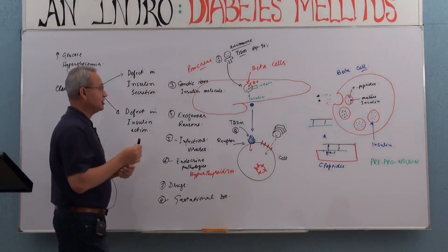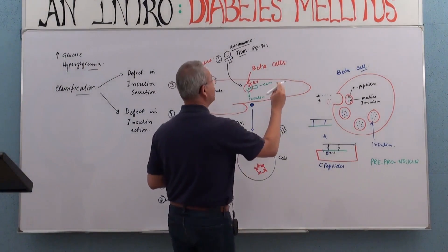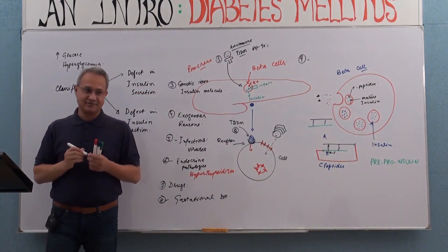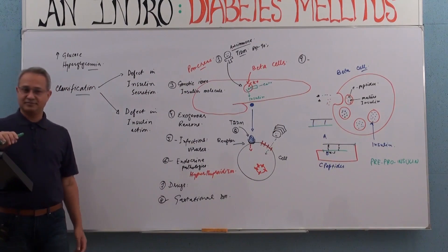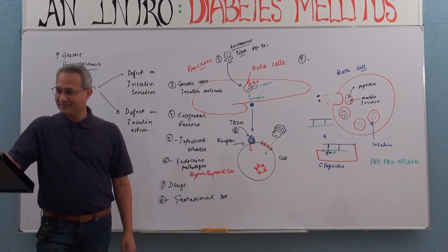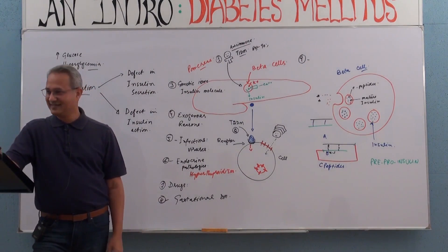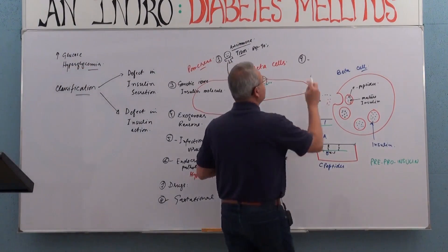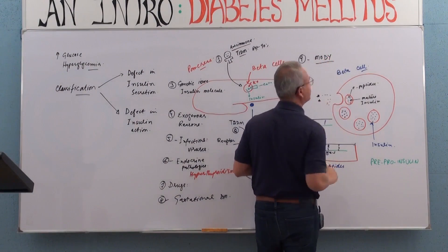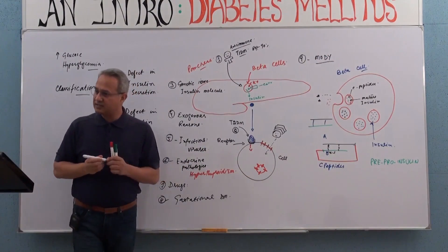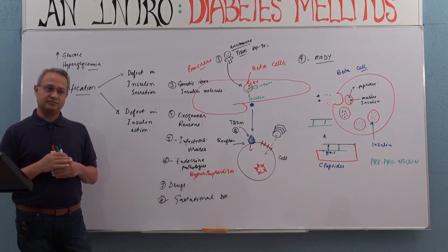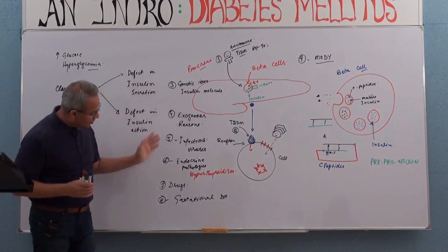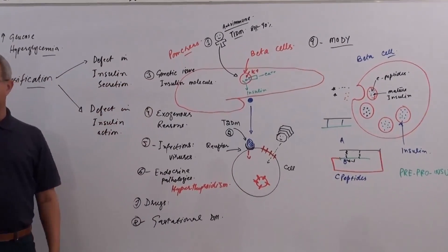The most important one was left out: maturity onset diabetes of the young — MODY. About 80% of people develop type 2 diabetes mellitus, about 10% develop type 1 diabetes mellitus, and the remaining 10% develop all of these other things. In that remaining 10%, MODY is the most important one.